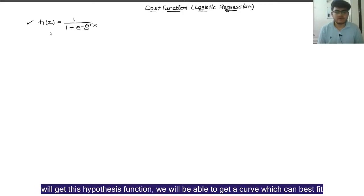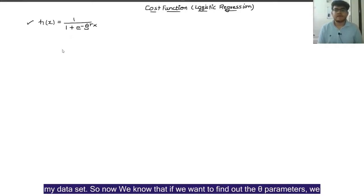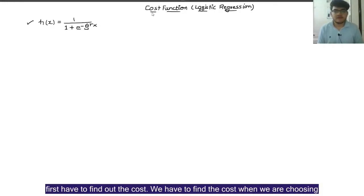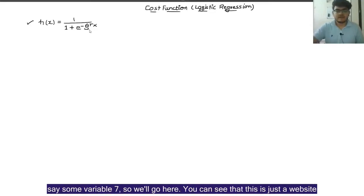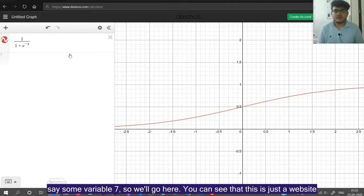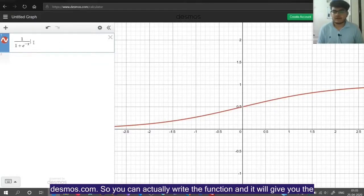If we get this hypothesis function, we will be able to get a curve which can best fit our dataset. To find out the theta parameters, we first have to find out the cost when we are choosing certain theta parameters. For example, if I choose theta as some variable 7. You can see this is just a website, desmos.com, where you can write the function and it will give you the corresponding curve.